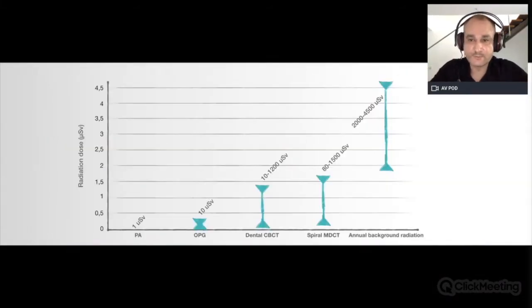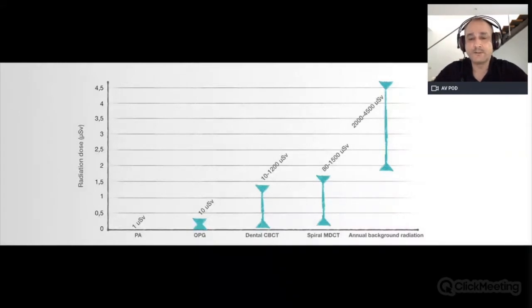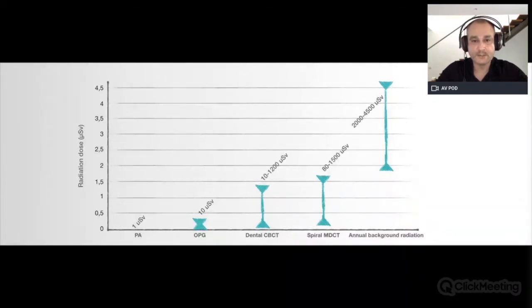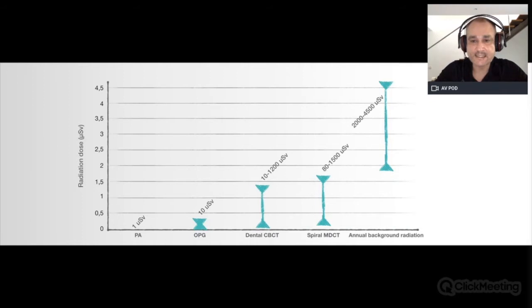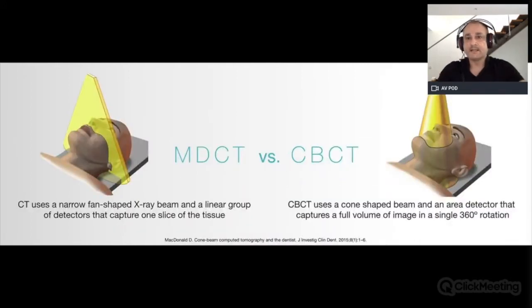To put radiation into perspective, here's a comparison between conventional and 3D radiographs and the annual intake. Depending on the CBCT machine, we might have the same amount of radiation exposure as a normal OPG, or with different equipment, up to 10 times more. There is a big difference between MDCT and CBCT scans — the MDCT radiation exposure is much higher. To understand this better, the human being receives about three times the annual radiation dose of an MDCT scan just from natural background sources.